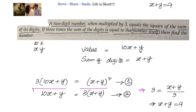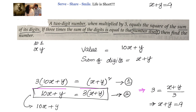Let us work on the equation which says 10x plus y equals to 3 into (x + y). Opening the brackets, we have 10x + y equals to 3x + 3y. Simplifying that, we get 7x equals to 2y. This is our second equation which we need to solve for x and y values.